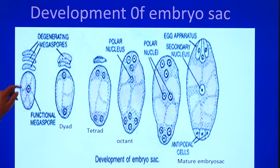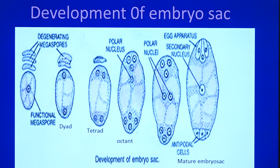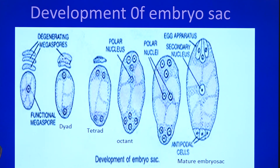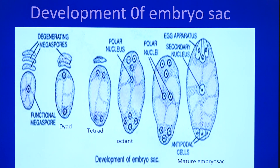The one functional megaspore enlarges in size. The nucleus present in it undergoes a series of mitotic divisions. The first mitotic division results in the formation of two nuclei. Each nucleus moves towards the opposite poles. That stage is considered as the dyad — the two-nucleate embryo sac.